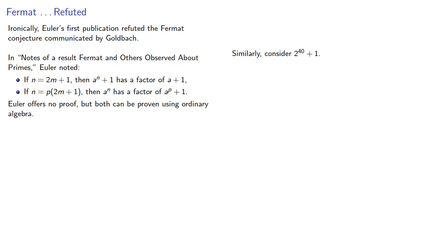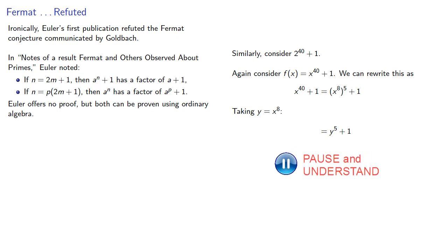Similarly, consider 2 to the 40th plus 1. Again, let's consider the polynomial x to the 40th plus 1. We can rewrite this, and taking y equals x to the 8th, this could be rewritten as y to the 5th plus 1.